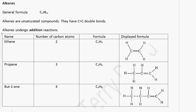Now let's look at the next homologous series called alkenes. The general formula for an alkene is CnH2n. Alkenes are unsaturated compounds — they have carbon to carbon double bonds. And alkenes undergo addition reactions. So when we compare an alkene to an alkane, we notice it's unsaturated, has carbon to carbon double bonds, and undergoes addition reactions.